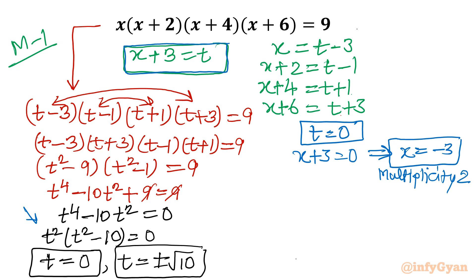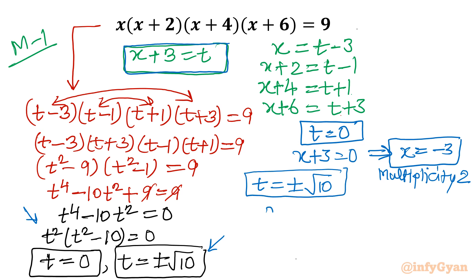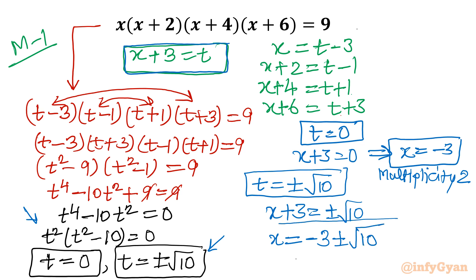For the second case, t equals plus or minus square root 10. Since t is x plus 3, we have x plus 3 equal to plus or minus root 10. Taking 3 away from both sides gives two solutions: x equals minus 3 plus or minus square root 10. So overall we have 4 solutions: x equals minus 3 with multiplicity 2, and x equals minus 3 plus or minus square root 10.